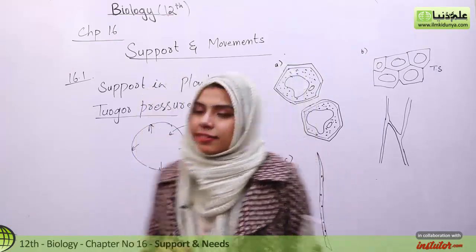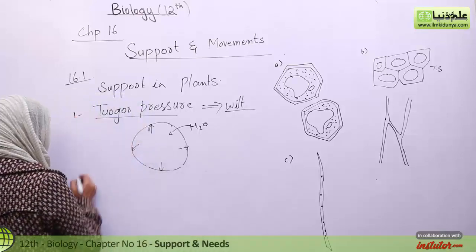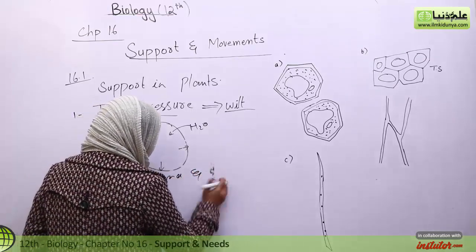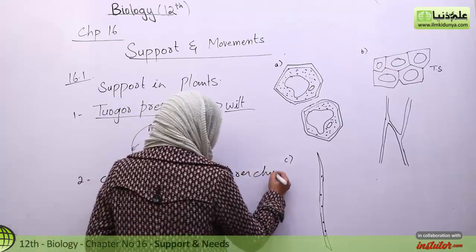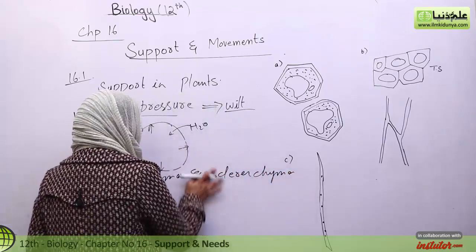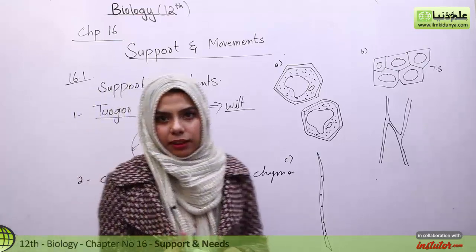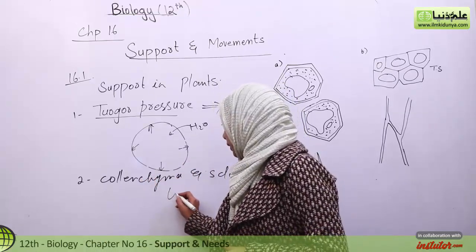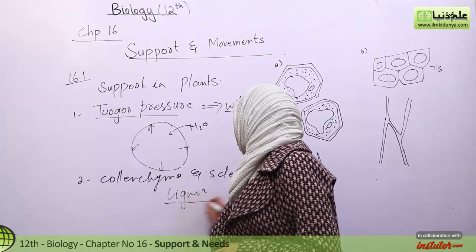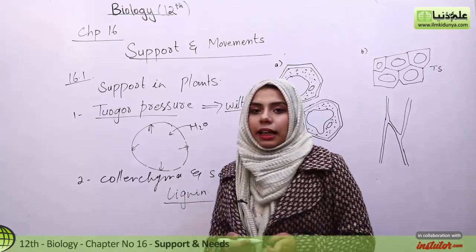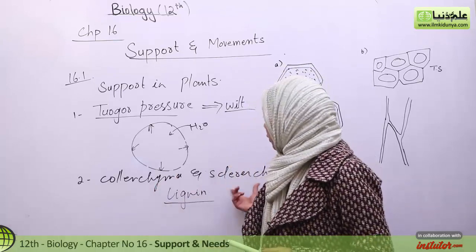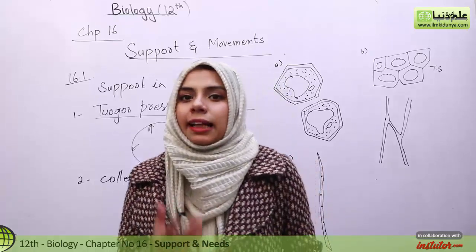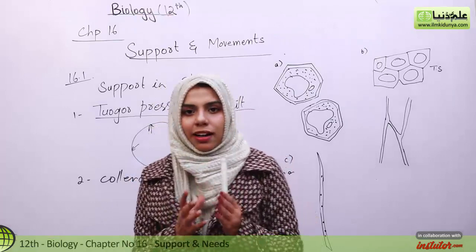Next, if we talk about collenchyma and sclerenchyma — these two cells are known as the supportive cells of the plant. In sclerenchyma cells, lignin is deposited. Lignin is a hard carbohydrate material that gives support to the plant cells. Collenchyma and sclerenchyma are essentially lignified cells, and the deposition of lignin makes the plant cells hard.